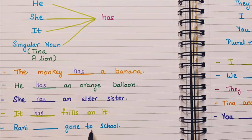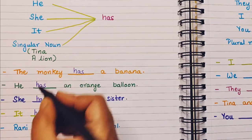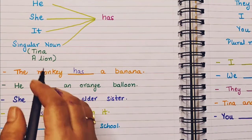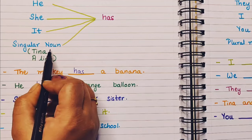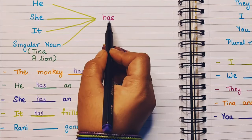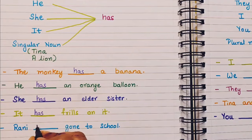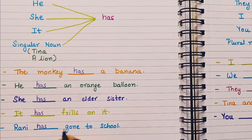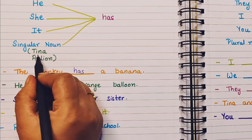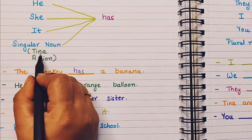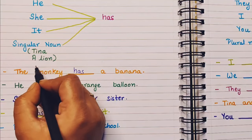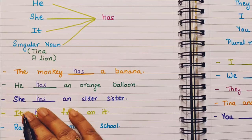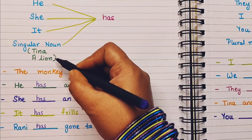Rani — dash — gone to school. Now here we have Rani, who is one person, meaning it is a singular noun. With a singular noun we always use has. So: Rani has gone to school. Examples of singular nouns include any name — Tina, a lion, a tiger — all of these represent singular nouns.